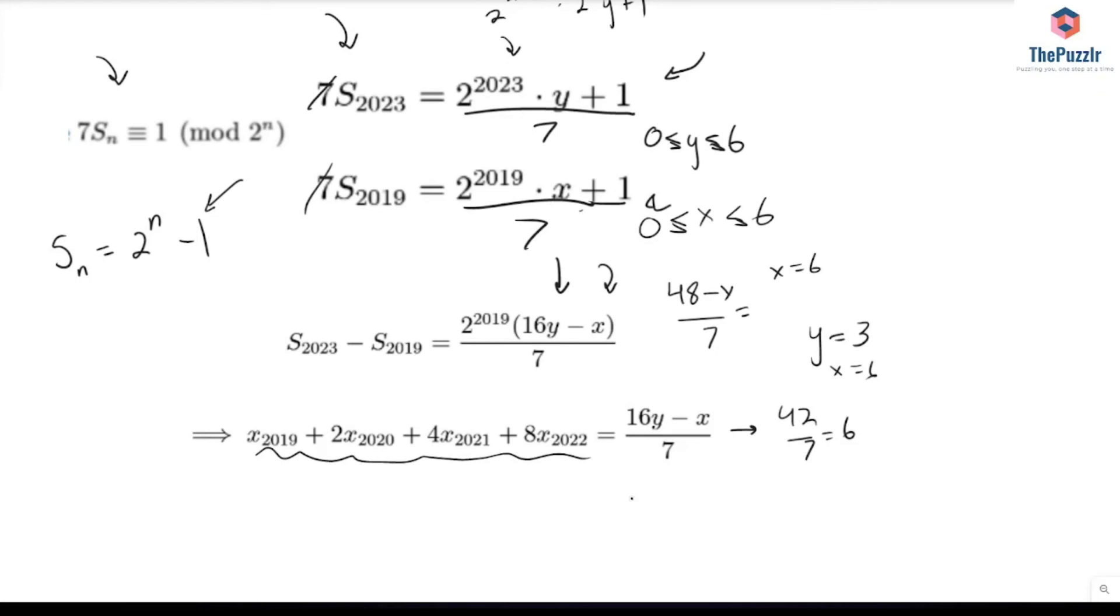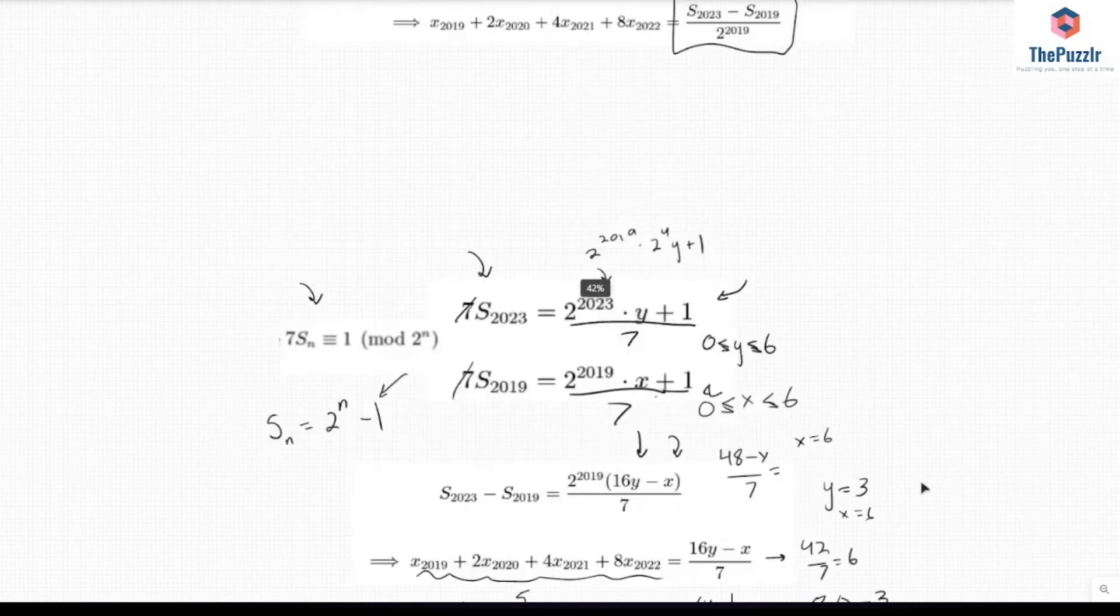If it's 4, then x must be 1, because then we have 64 minus 1 over 7 equals 9. What else can we have? Well, setting y equals 5, we have 80 minus 3 over 7 gives us 11. And then what if we have 6? Then we have 96 minus x over 7, so x must be 5. 96 minus 5 is 91, over 7 is 13. So we either have 6, 9, 11, or 13.